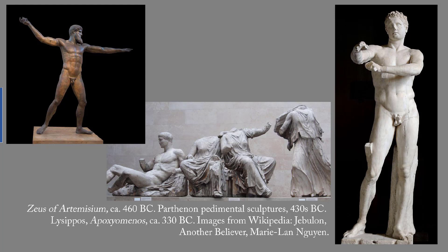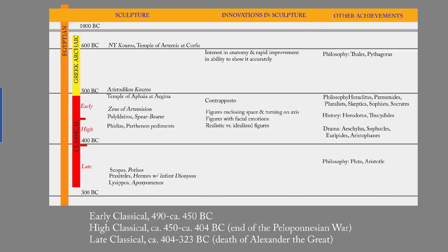The subjects of sculpture during the Classical period are mythological figures and stories. There are some portraits, including political figures, and a few victorious athletes. Dominant ideas: men are fascinating, they are worthy of study and accurate representation. Life on Earth is important. And in philosophy, there is an amazing range of ideas.